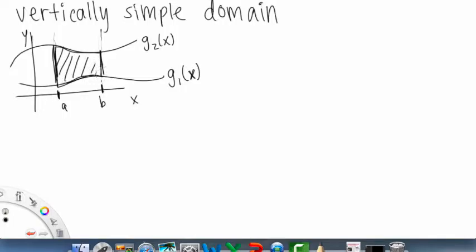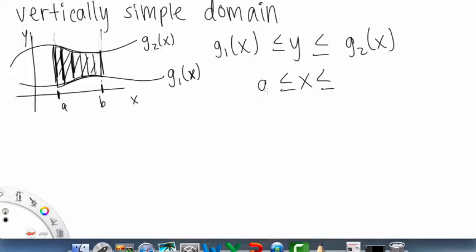And this is vertically simple, because y stays in between, it doesn't go below G1 of x, and it doesn't go any higher than G2 of x. So that means that y is bounded by G1 of x on the bottom, right, because it doesn't go any lower than it, and by G2 of x on the top, because it can't go any higher than it. And x, x has the simple bounds, just A to B, right? And if we move B over here, then we'd extend the region.